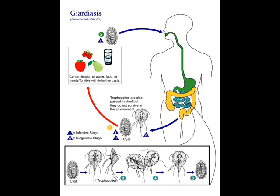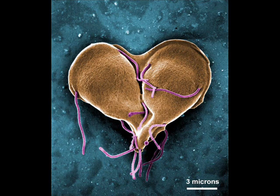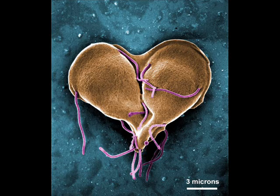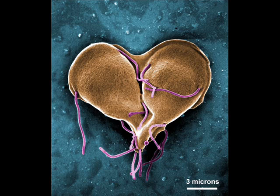In the small intestine, the cyst excysts, releasing two trophozoites. The trophozoites multiply by binary fission and remain in the small intestine freely or attached to the mucosa. The trophozoites begin to encyst as they move closer to the colon. The cysts are infective when they are passed in stool, thus person-to-person transmission is possible.